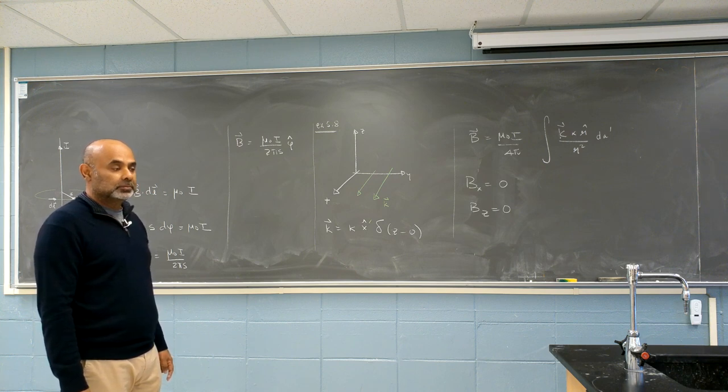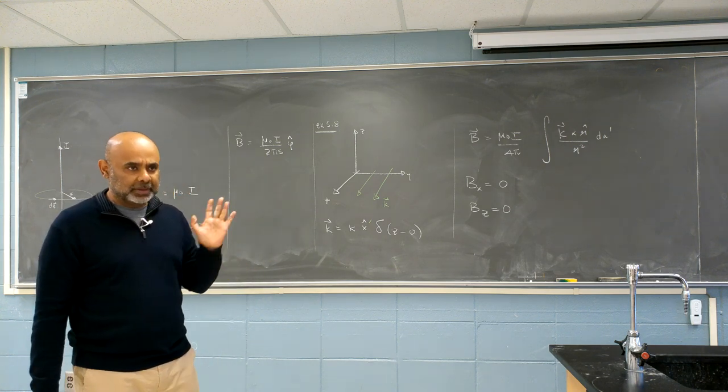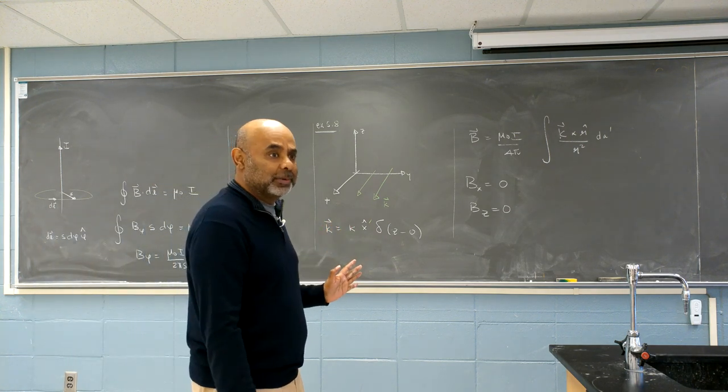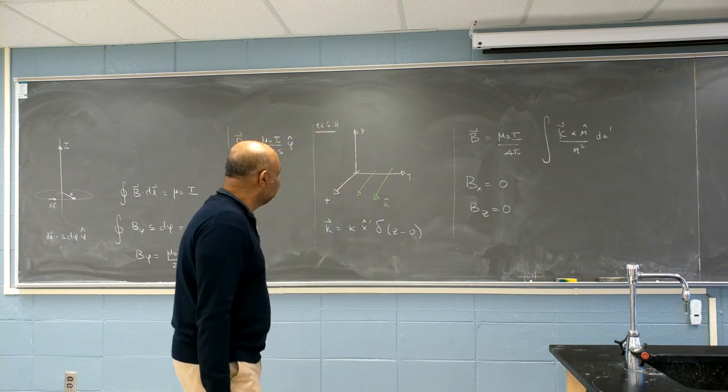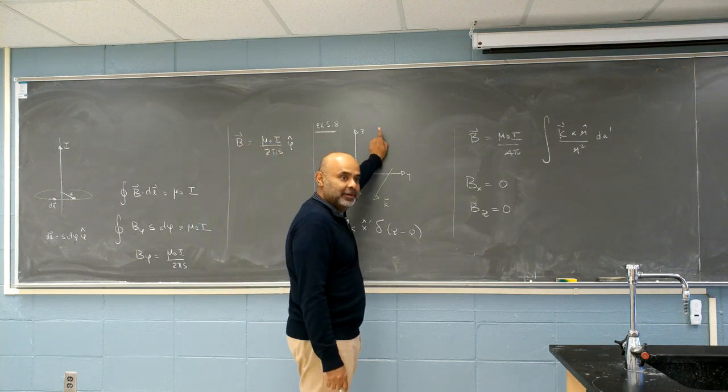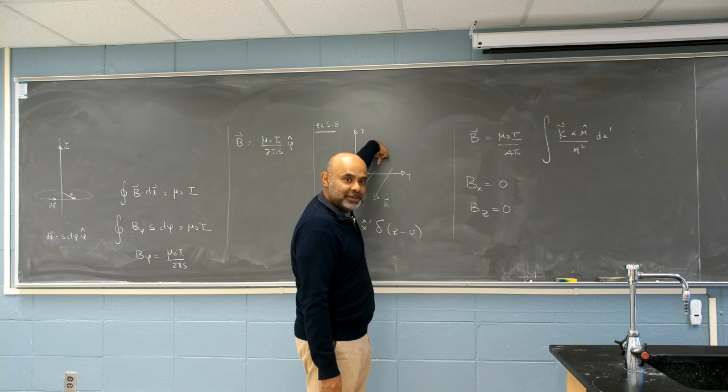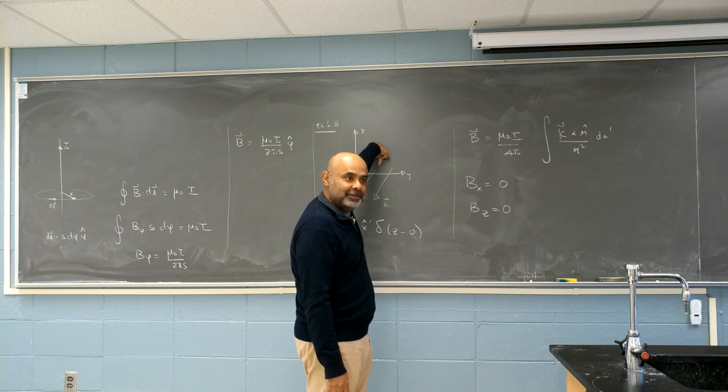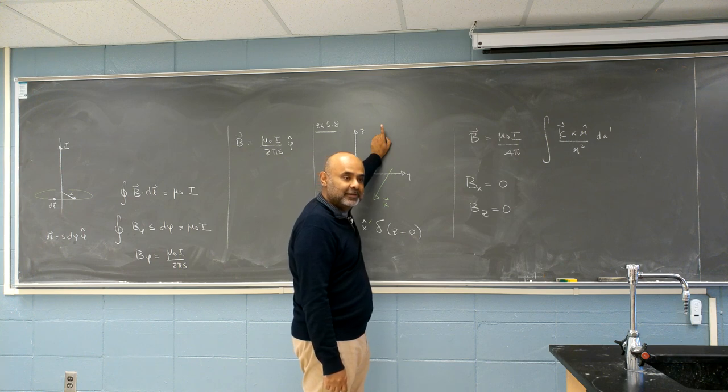The components cancel? It is true that the components will cancel if you write out the integral. Fine. But that's not the argument. I mean, then we have to write out the integral and show that the components cancel. Let's say it points upward. Now you turn around and stand. K has become minus K. All of a sudden, you think it points downward?